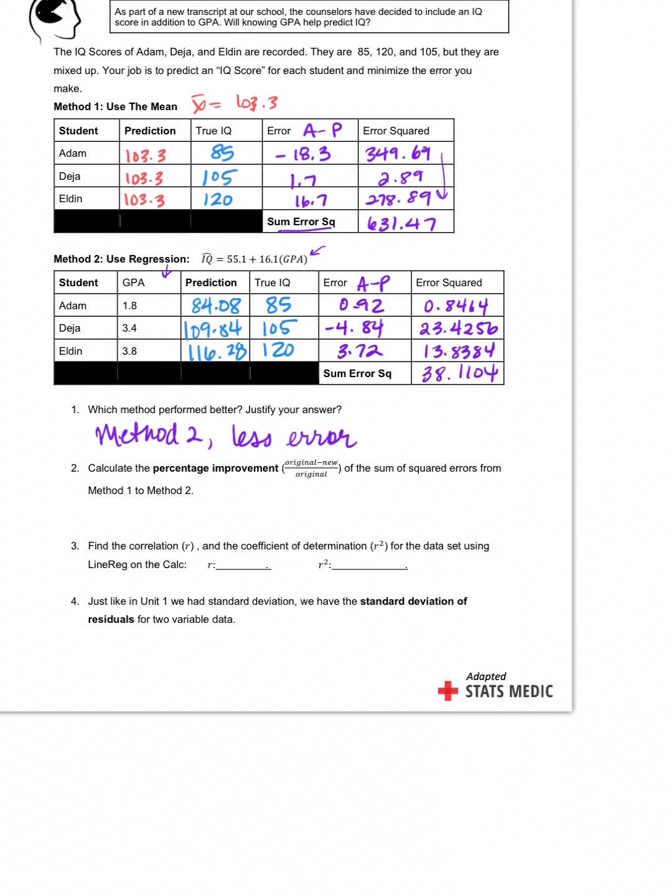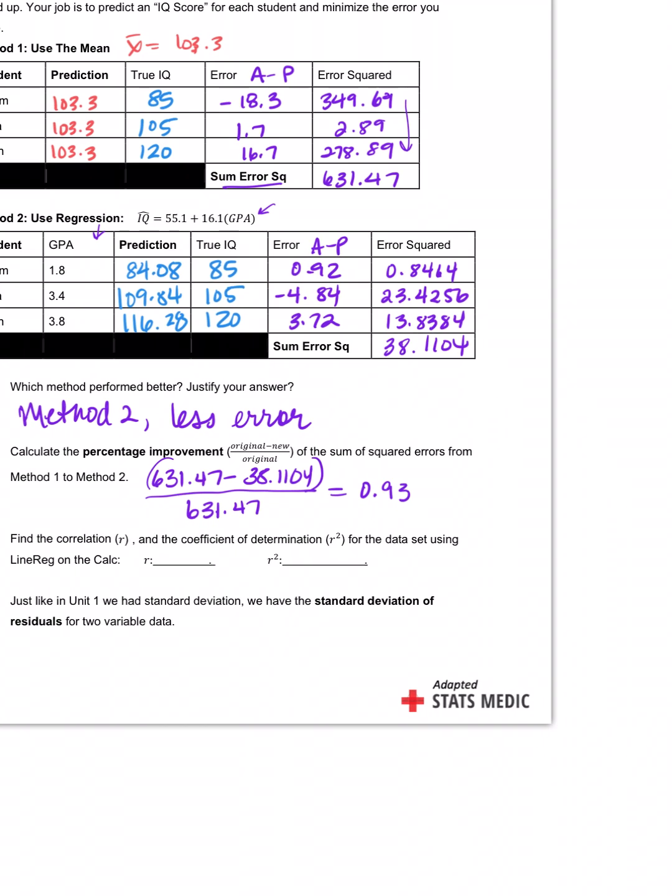Now it's asking us to calculate the improvement from the original Method 1 to Method 2. So what we're gonna do is take that original error, 631.47, and we're gonna subtract the new error, 38.1104, over the original. When I do that, I get 0.93. Now what does this tell me? This is what we call r-squared. And the way we interpret this is we're going to make it a percentage, and we're going to say 93% of the error is explained, or you could say accounted for, by our new method, which is pretty good, wouldn't you say?